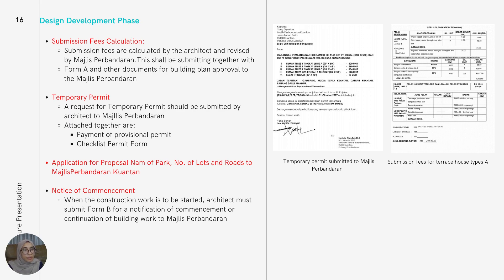A request for a temporary permit shall be submitted by the architect to Majlis Perbandaran, and it shall be attached together with payment of the professional permit and a checklist of the permit form. The architect shall also send a formal letter and application for the plot number, lot number, and routes to Majlis Perbandaran.